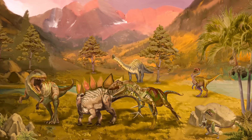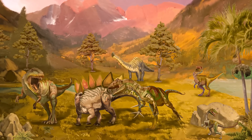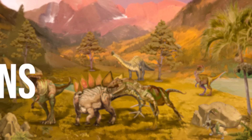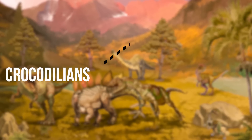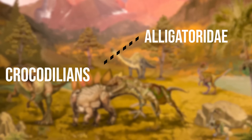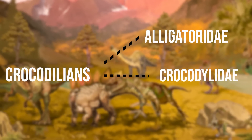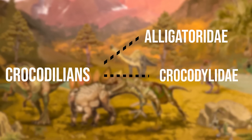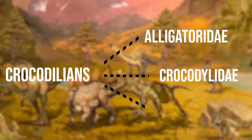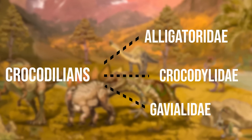By the end of the Mesozoic era, 66 million years ago, the three main branches of crocodilians had diverged. These were the Alligatoridae, which includes alligators and caimans; the Crocodilidae, which includes crocodiles, dwarf crocodiles, and false gharials; and the Gavialidae, which includes the gharial.